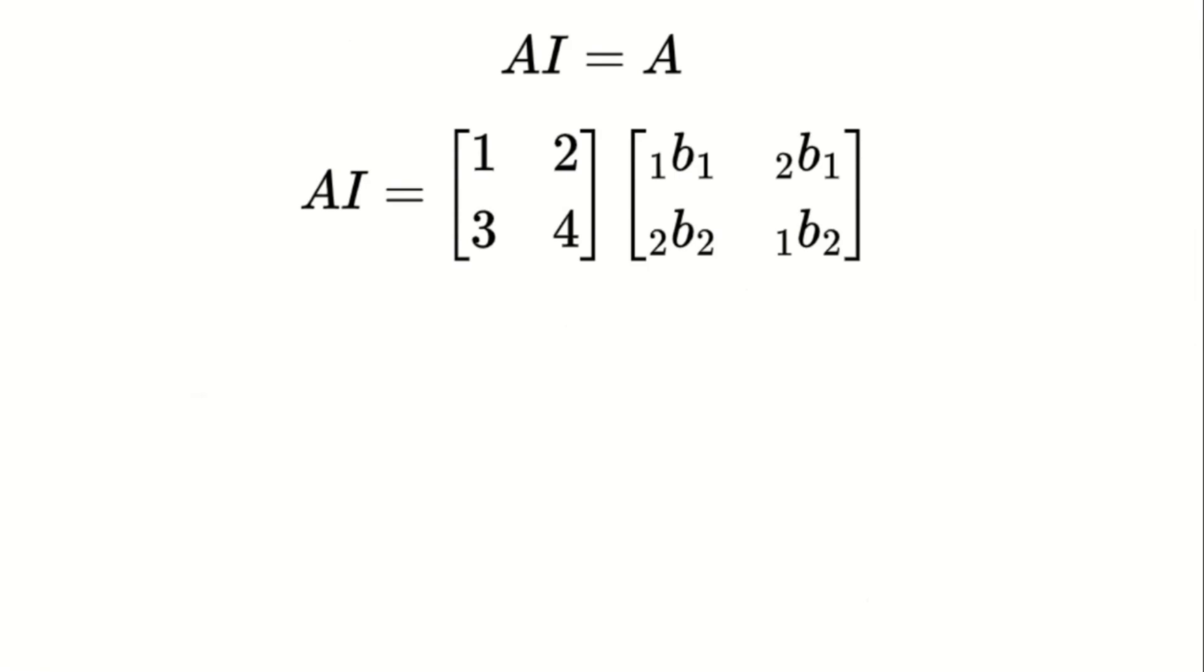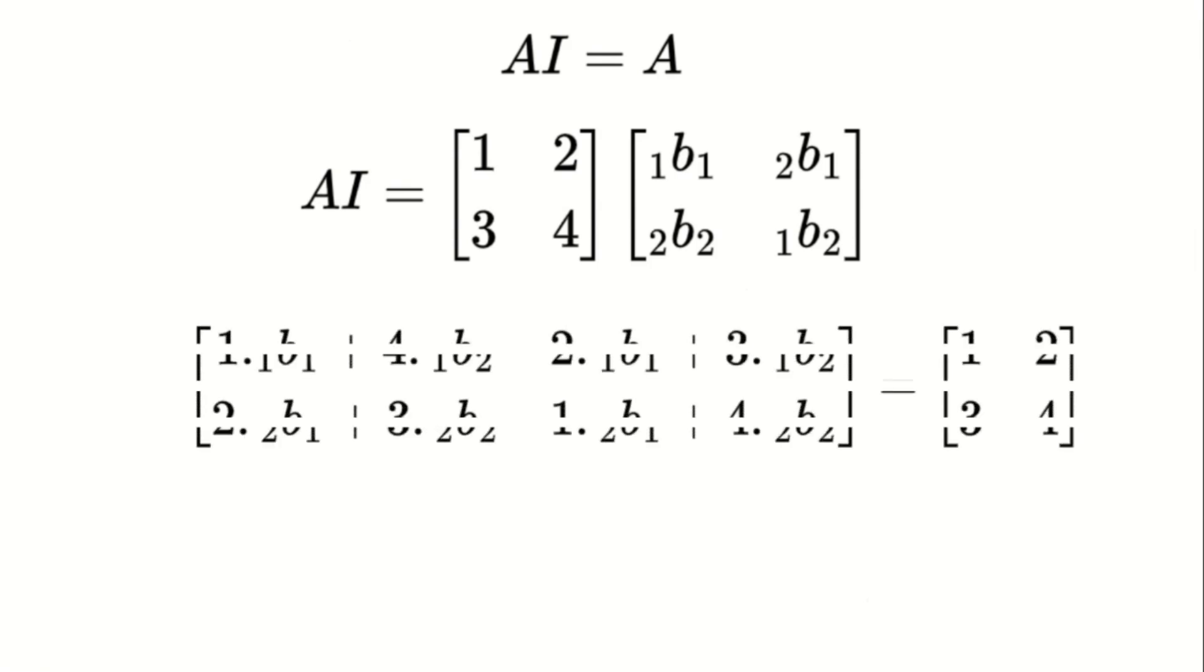Let the identity matrix I have elements A, B, C, and D. When we multiply A by I, the result should equal A. After performing the multiplication and comparing corresponding elements, we simplify to find that the identity matrix in this system has elements 1 and 0 in the first diagonal and 0 and 1 in the second diagonal.